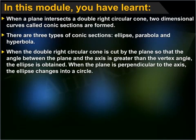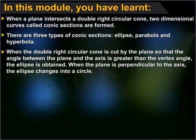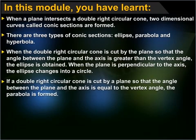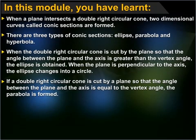When the double right circular cone is cut by the plane so that the angle between the plane and the axis is greater than the vertex angle, the ellipse is obtained. When the plane is perpendicular to the axis, the ellipse changes into a circle. If a double right circular cone is cut by a plane so that the angle between the plane and the axis is equal to the vertex angle, the parabola is formed.